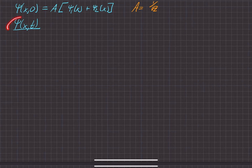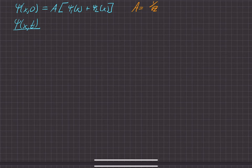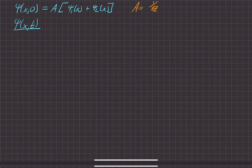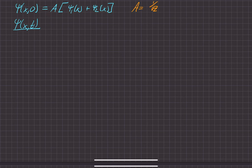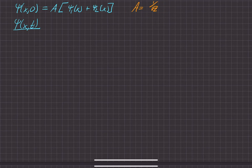In part b of the problem, we're trying to find the time-dependent form of the wave function, where the time-dependent form at a snapshot of time at t equals 0 looks, in general form, something like this. And in the first part of the problem, we found that a is actually equal to 1 over square root of 2.